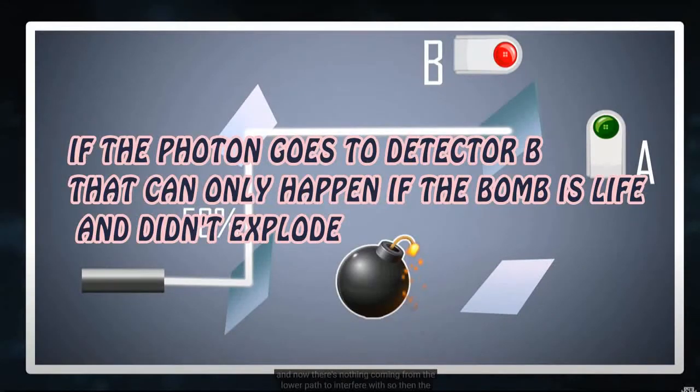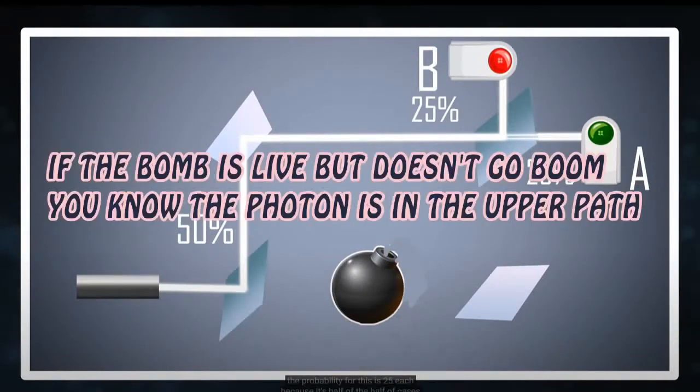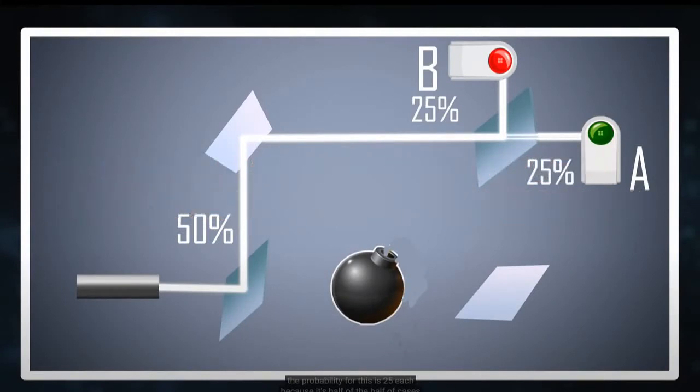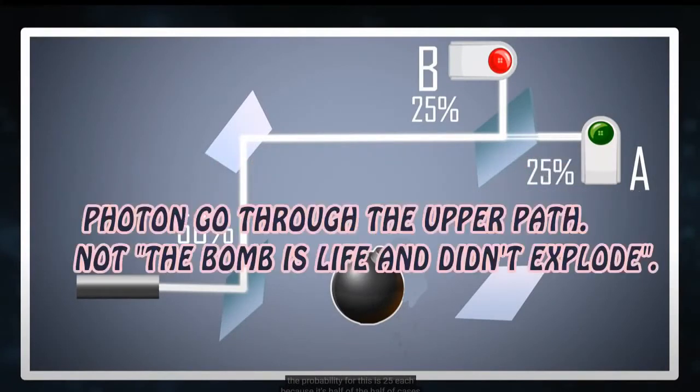In the video at 7:54 it said, if the bomb is live but doesn't go boom you know the photon is in the upper path. Then, 25% goes to detector B. So the photon goes to detector B can only happen when the photon goes through the upper path, not that the bomb is live and didn't explode.